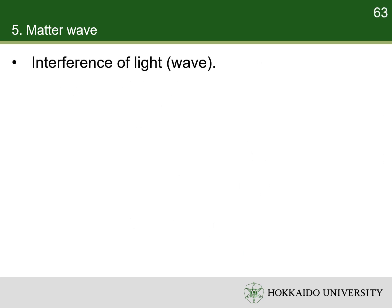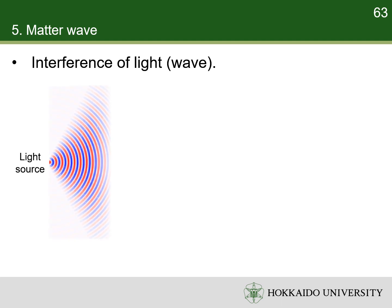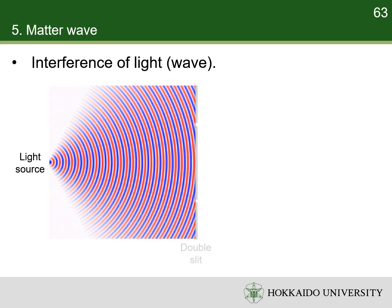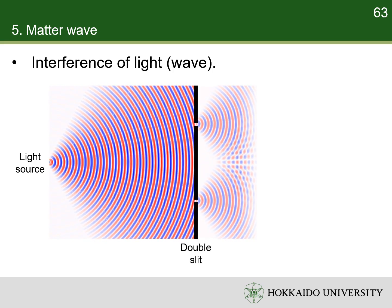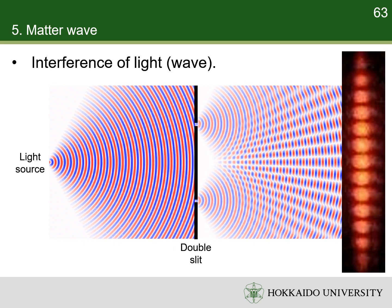If de Broglie's hypothesis is true, electrons should undergo interference like light. For example, in double-slit experiment of light, a light source illuminates a plate pierced by two parallel slits. The light passing through the slits is observed on a screen behind the plate.